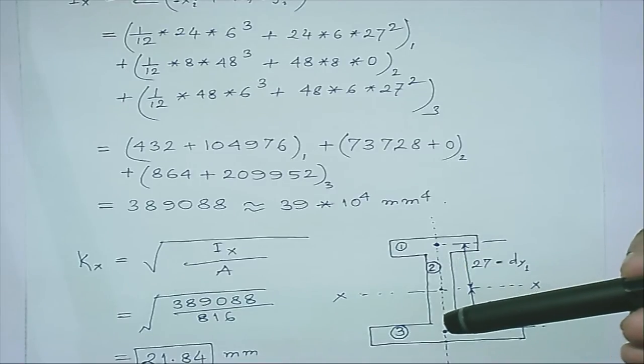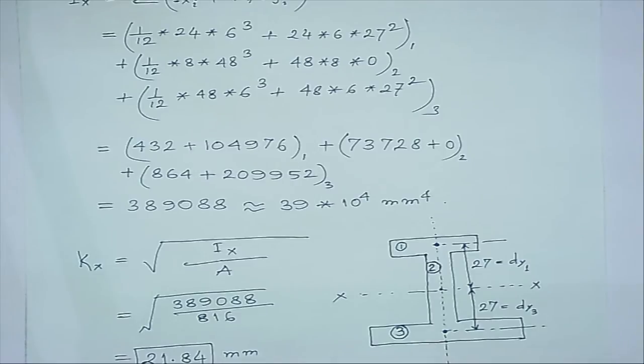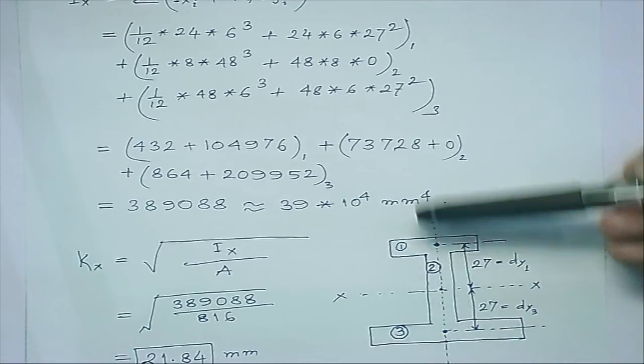kx is basically giving me the information as if more area I have about the x-axis, which is somewhere lumped from the x-axis.